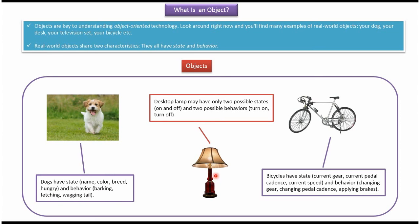Desktop lamp has two possible states: on and off, and two possible behaviors: turn on and turn off.